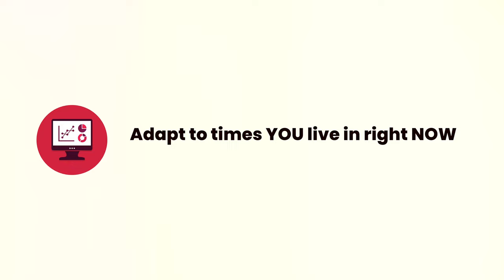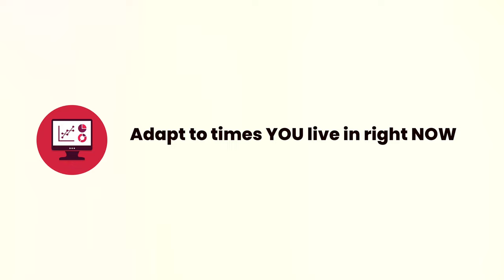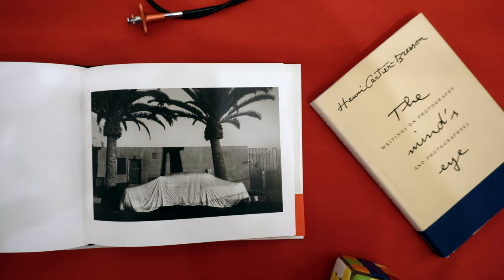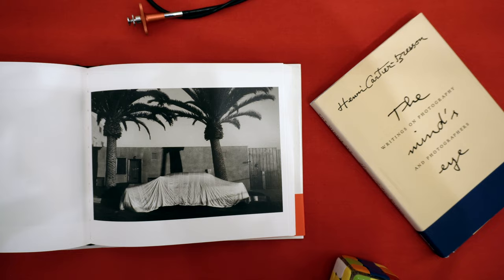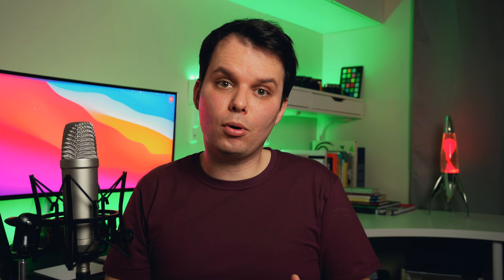Lesson number five: adapt to the times you live in right now. I sometimes have this romantic idea that I will do it the way Robert Frank did it back then, and that will get me into a similar position he was. But what worked back then for people like Robert Frank or Henri Cartier-Bresson won't necessarily work for you right now. Each period of time has its own specifics. Even though photography magazines are less likely to support photography essays of unfamous subjects — that's how Mary Ellen Mark used to call her subjects — that doesn't mean it's impossible.